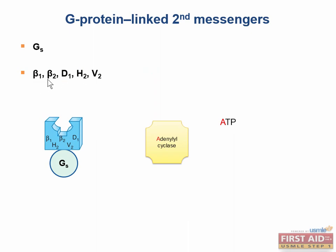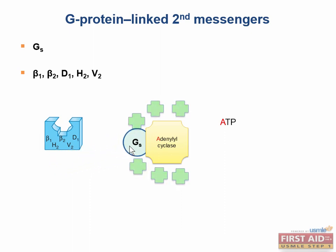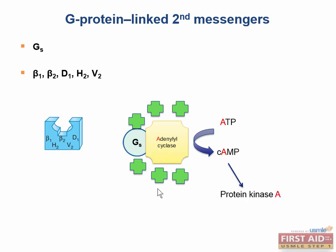Beta-1, beta-2, dopamine-1, histamine-2, and vasopressin-2 receptors all use the Gs G protein. When activated, the Gs subunit dissociates and stimulates adenylyl cyclase to produce cyclic AMP from ATP. The Gs can be thought of as G-stimulatory because it stimulates adenylyl cyclase. Cyclic AMP then activates protein kinase A, which phosphorylates downstream messengers.